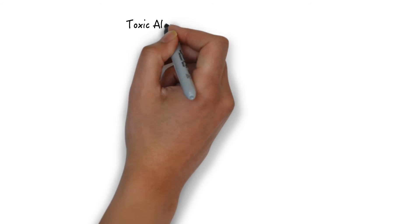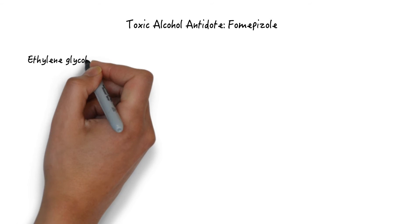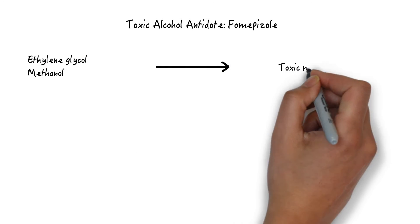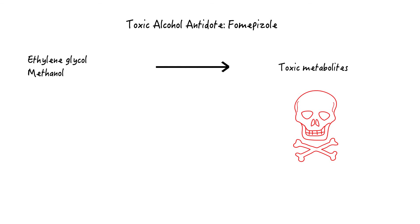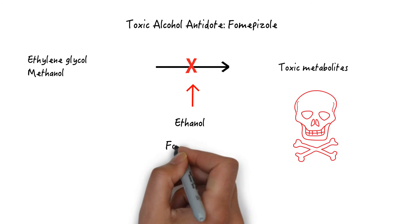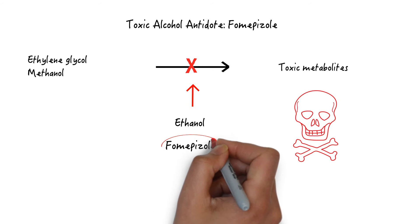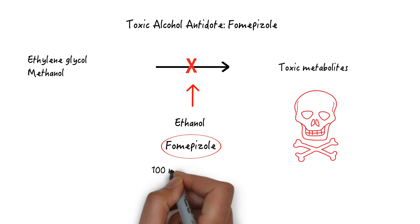One of the most important steps in managing the patient with potential toxic alcohol exposure is the use of antidotal therapy to prevent the formation of toxic metabolites of ethylene glycol and methanol. Ethanol can out-compete ethylene glycol and methanol for the enzymes that convert these toxic alcohols to toxic metabolites. Indeed, ethanol can be used as an antidote, but is not a benign treatment modality, and the use of fomepizole to block toxic alcohol metabolism is preferable.